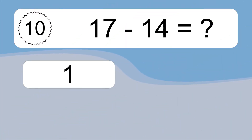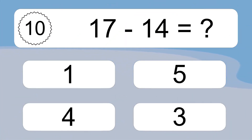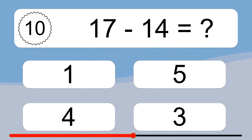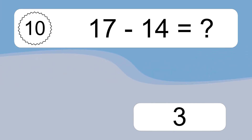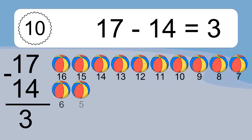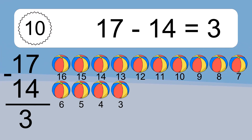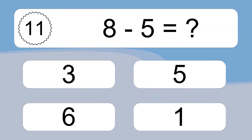17 minus 14 equals what? 17 minus 14 equals 3. Let's count it: 16, 15, 14, 13, 12, 11, 10, 9, 8, 7, 6, 5, 4, 3.